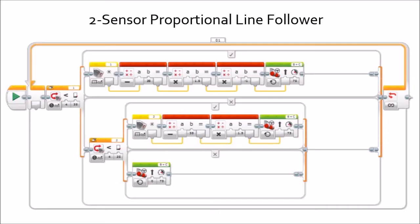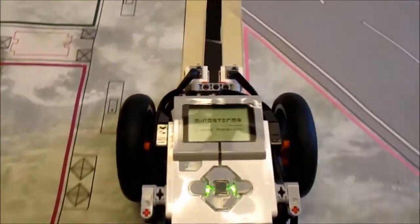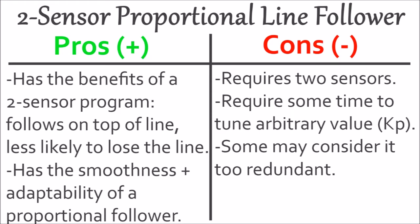Our fourth line follower is the two-sensor proportional line follower, which is exactly what it sounds like — a hybrid between a two-sensor and a proportional line follower. It uses the skeleton of the two-sensor line follower and integrates the proportional algorithm when making turns. The advantage is that it has both the benefits of a two-sensor line follower and a proportional line follower: it follows on top of the line and is less likely to lose it, while also having the smoothness and adaptability of a proportional line follower. The downside is that it requires two sensors, needs some fine-tuning of the arbitrary value, and some may find it too redundant — though that's a matter of opinion.